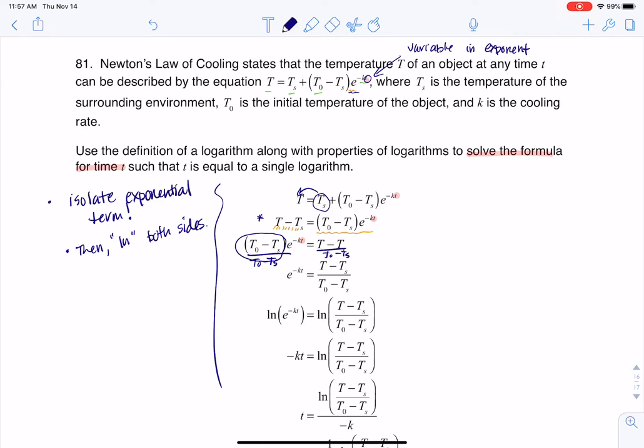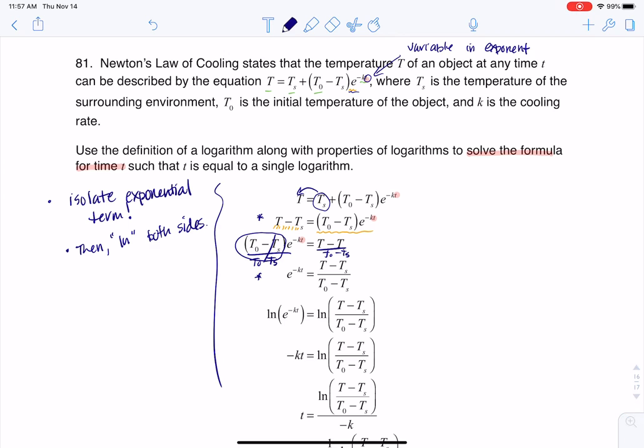It's ugly, but that's what I would do, and that would cancel out. That's why you see me getting to this equation. And now I have isolated my exponential term. Yes, I've got something ugly here, but it's still isolated.